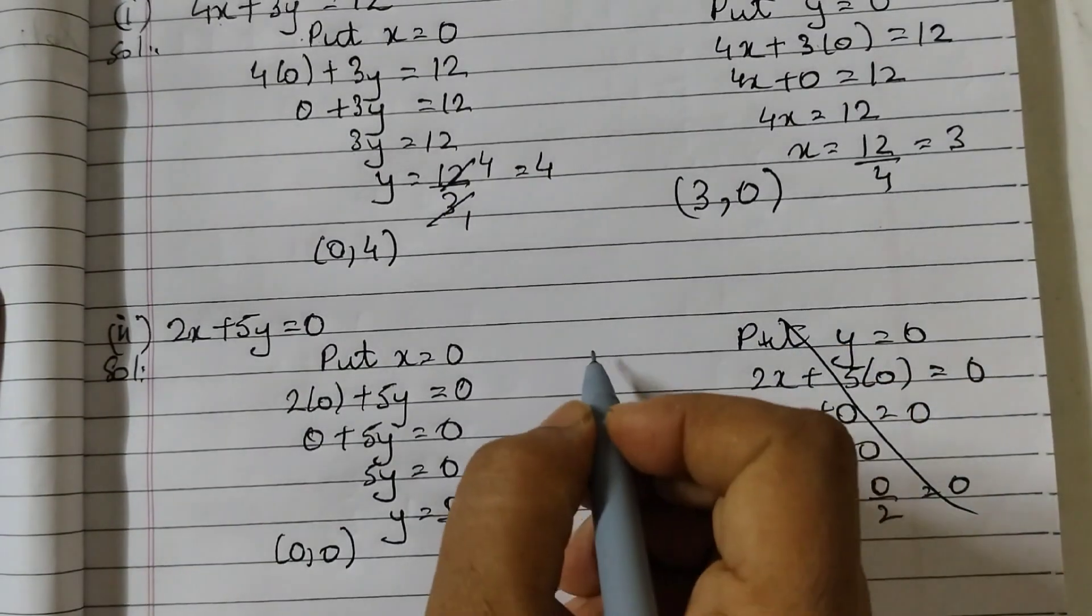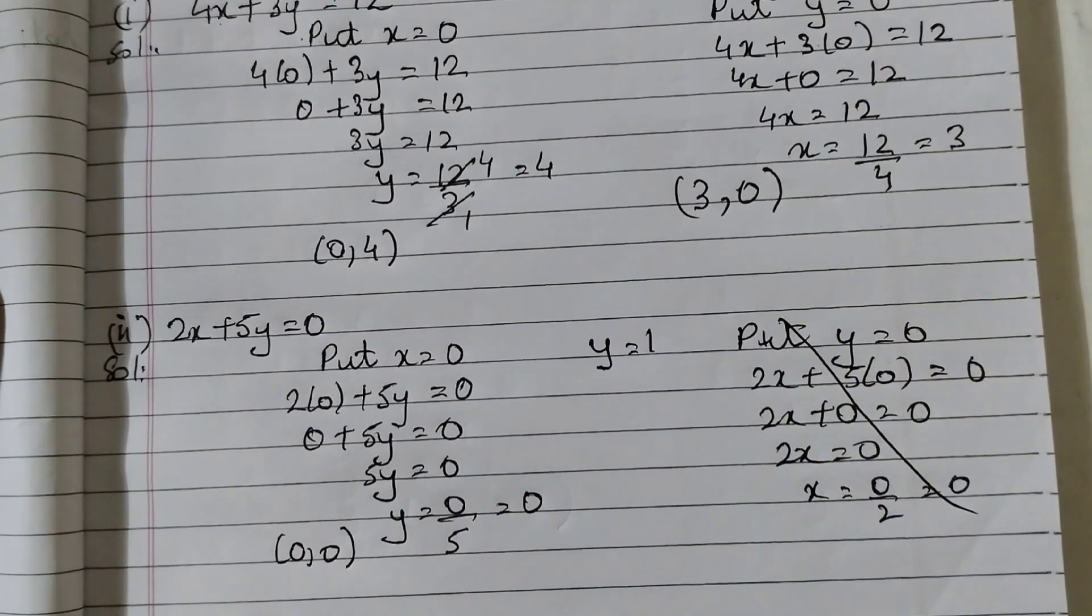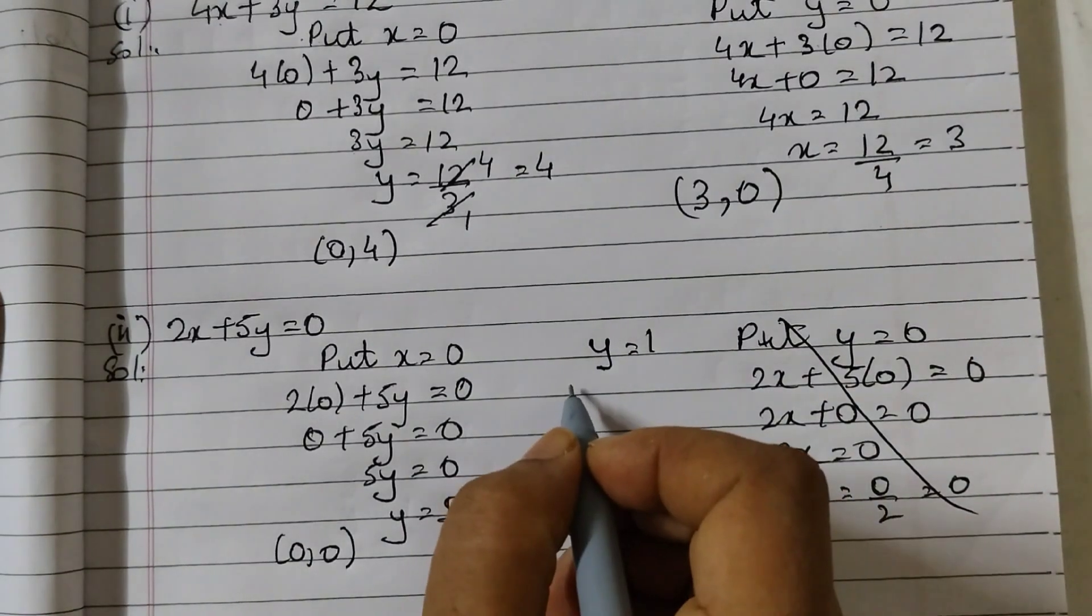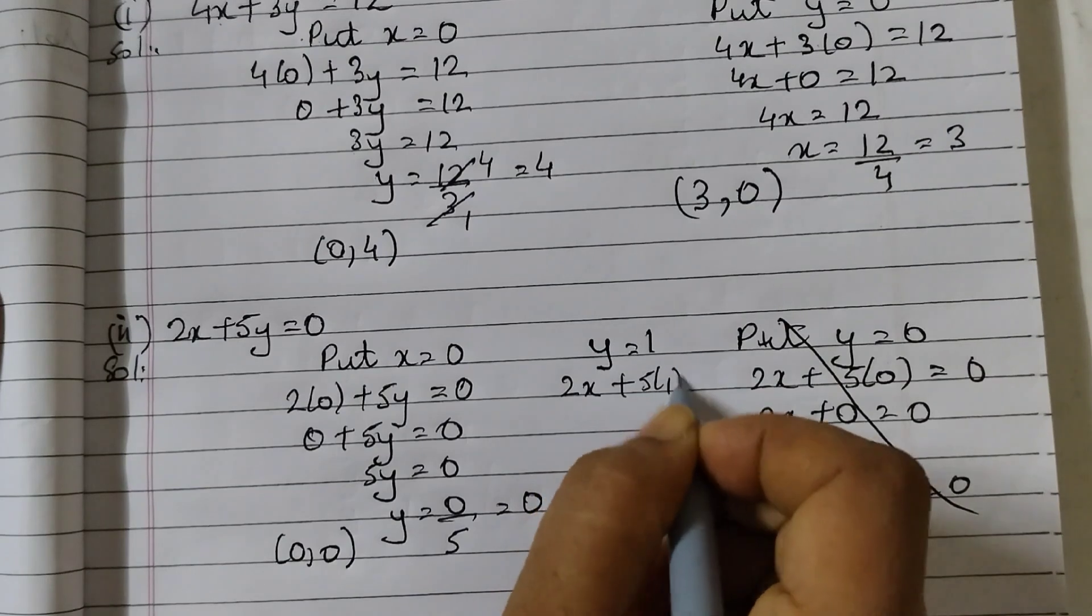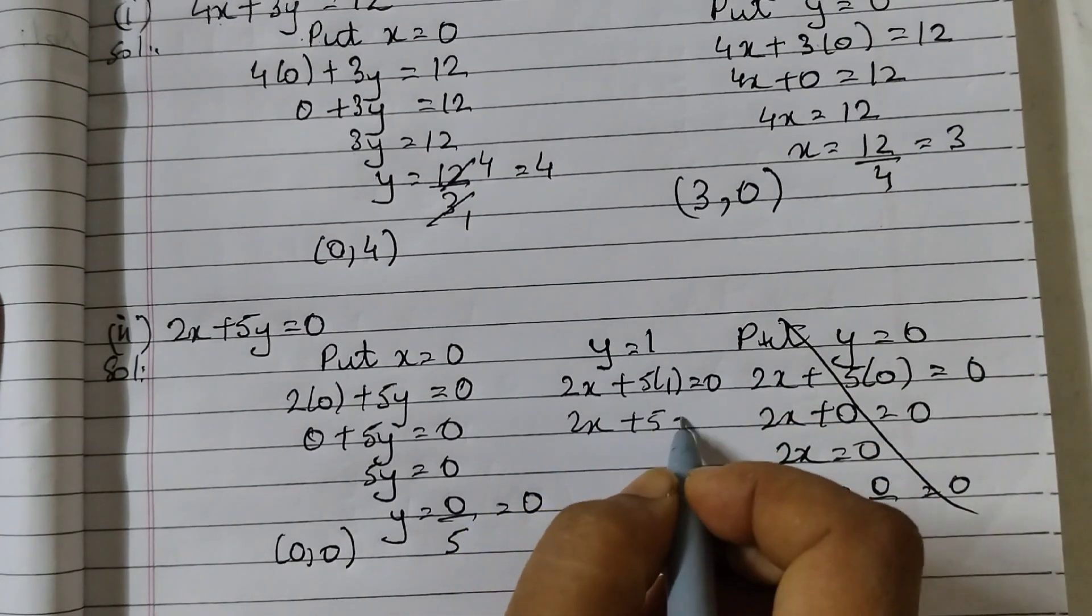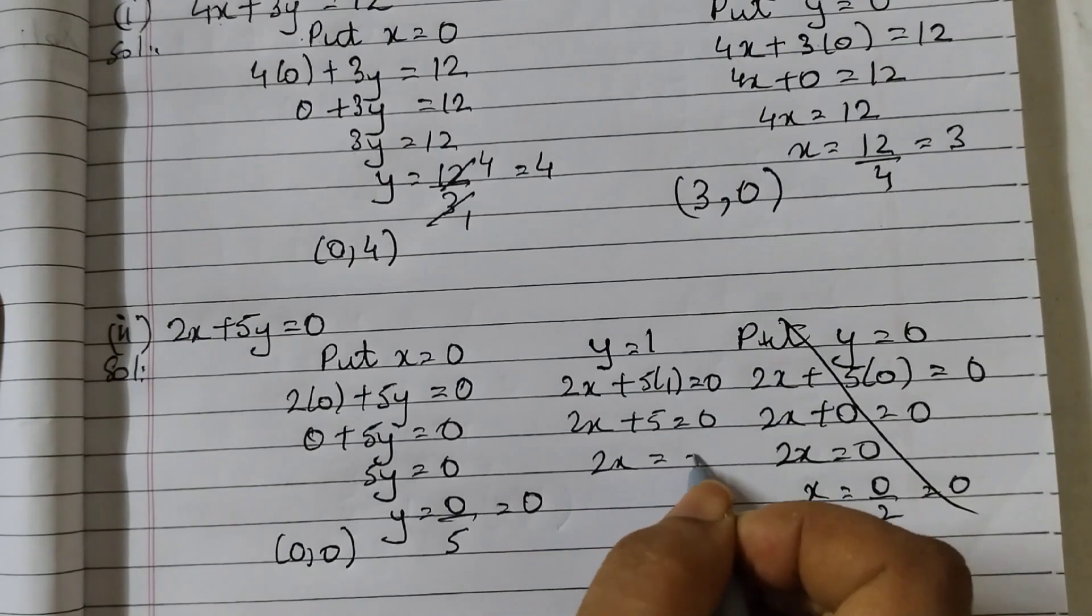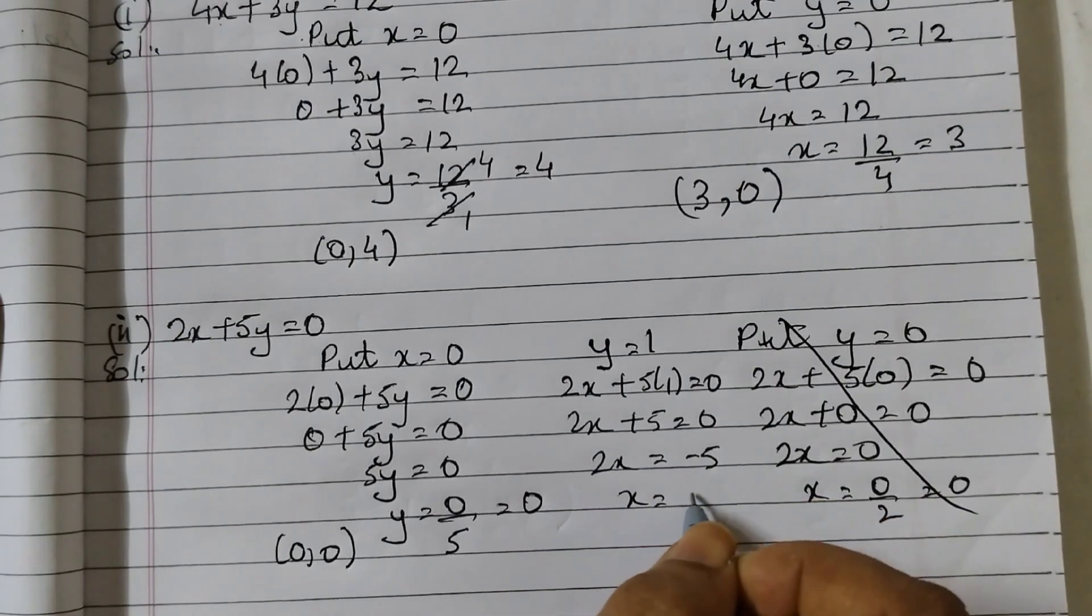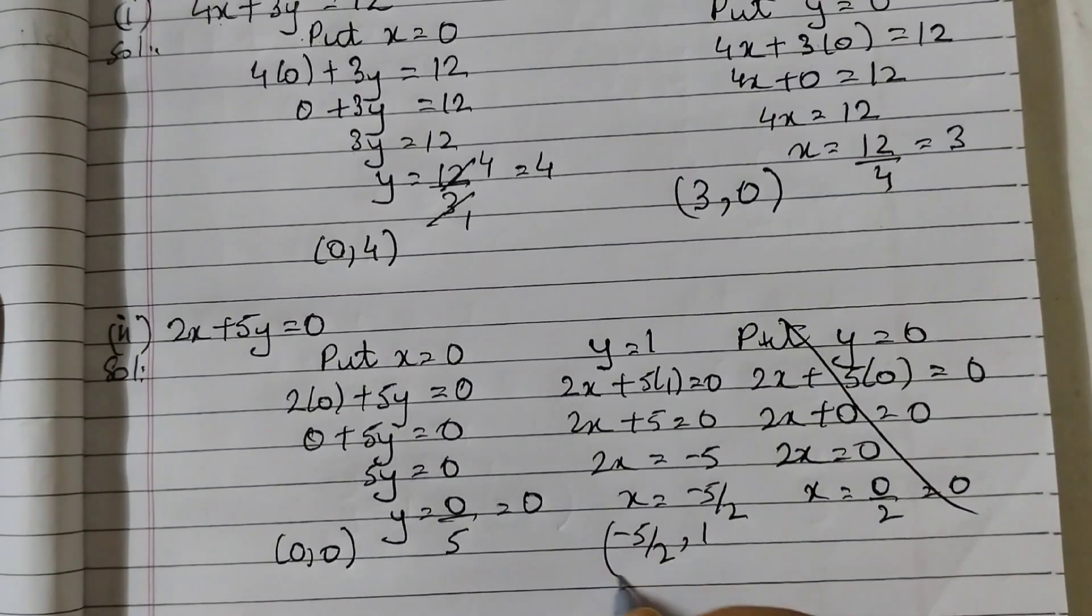So let's say we take y is equal to 1. So then 2x plus 5 into 1 is equal to 0. 2x plus 5 is equal to 0. 2x take 5 to the other side minus 5 x is equal to minus 5 by 2. So here the solution is minus 5 by 2 and 1.